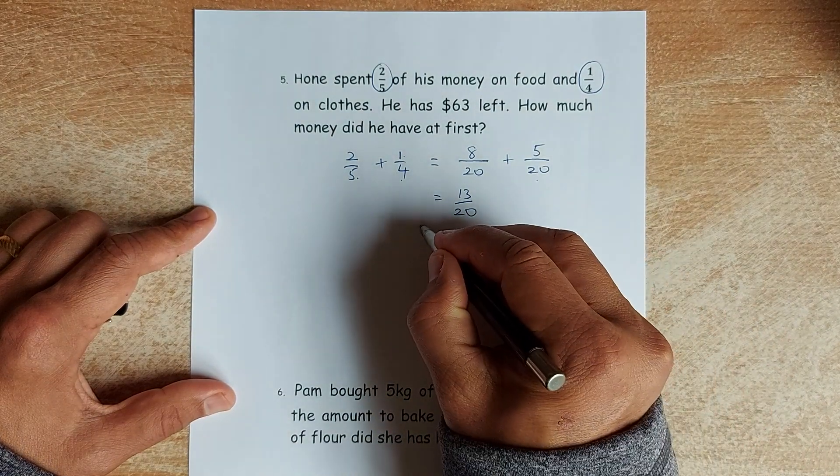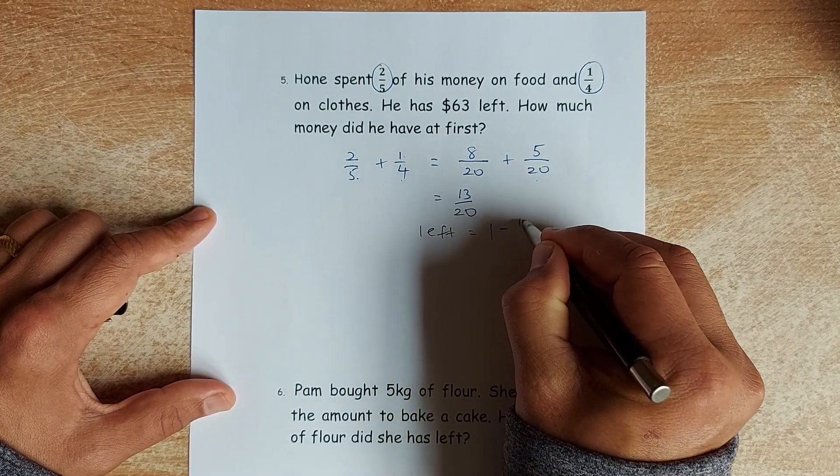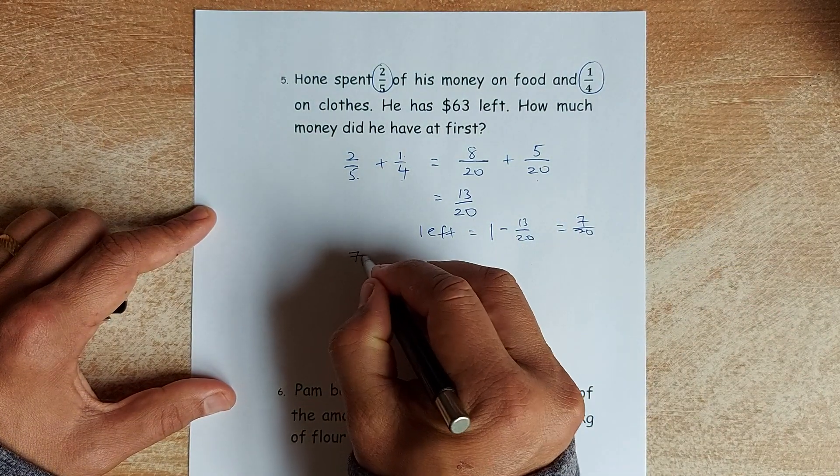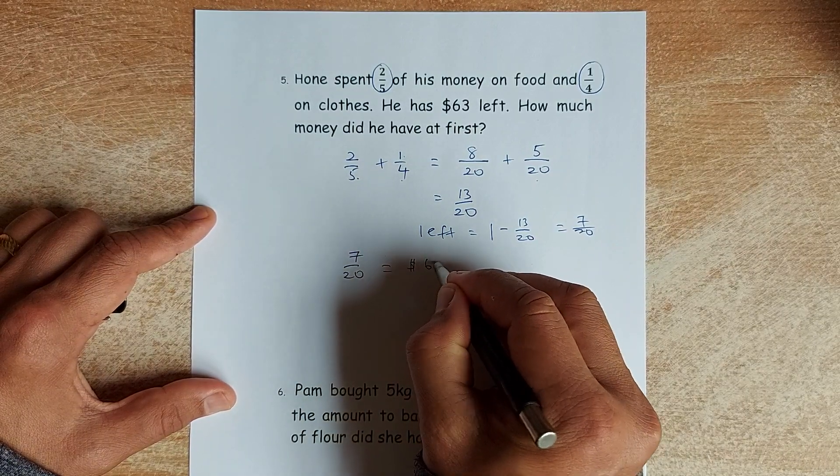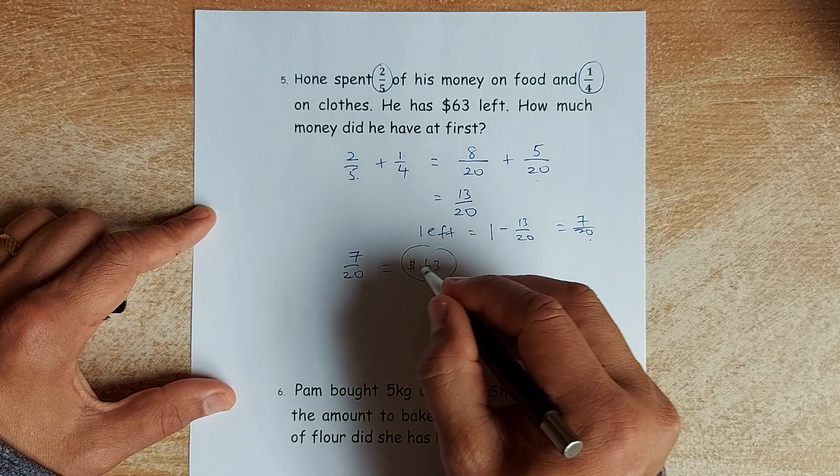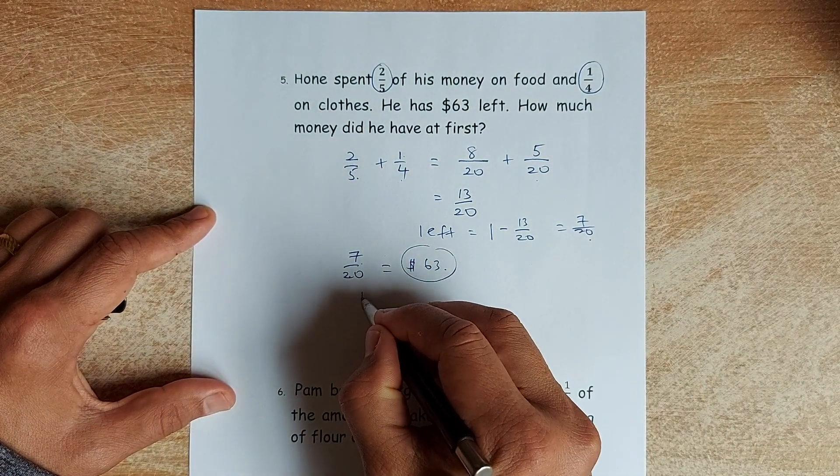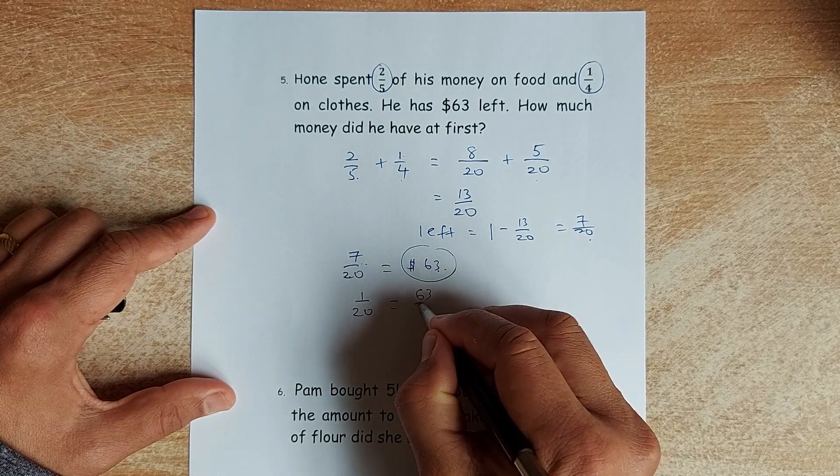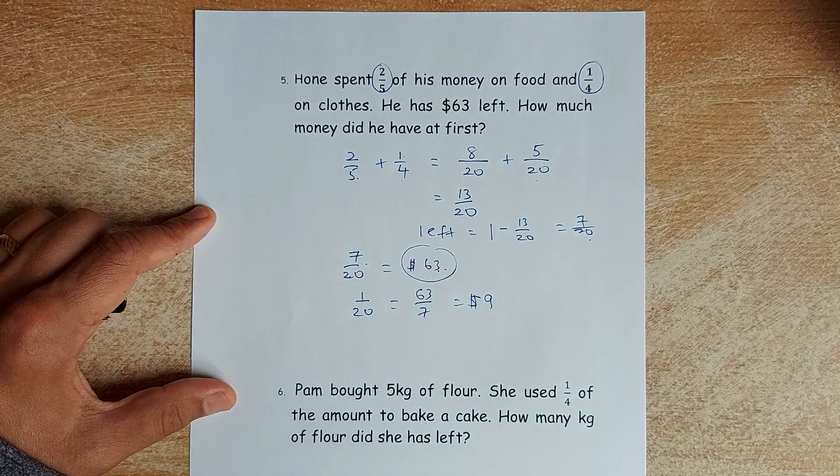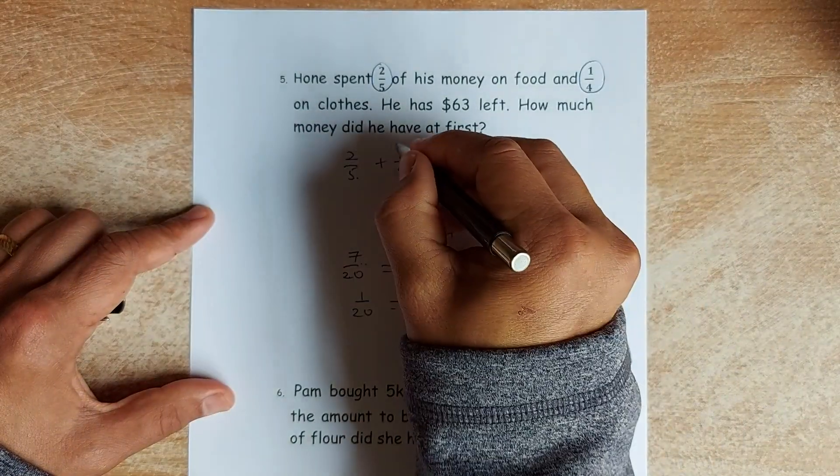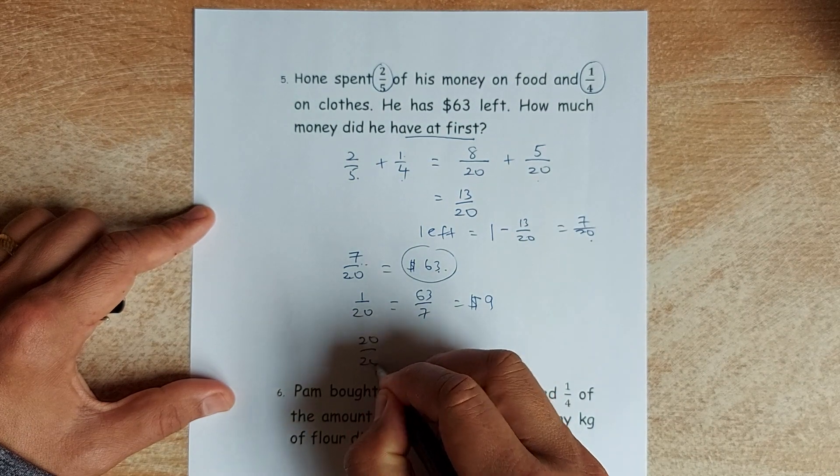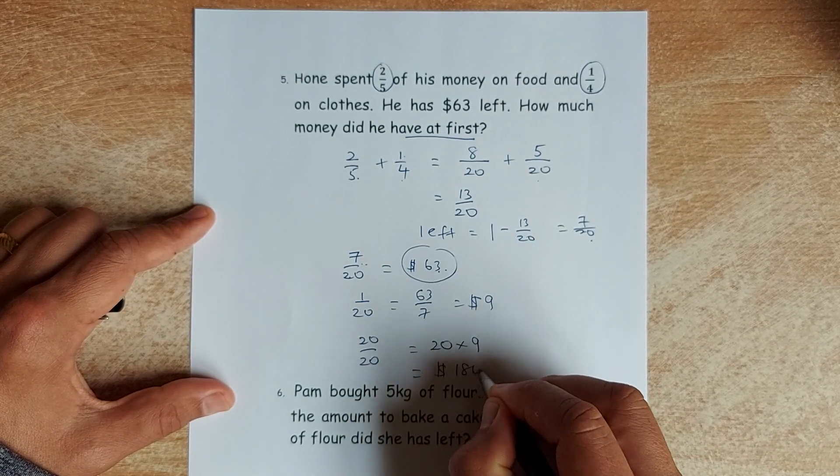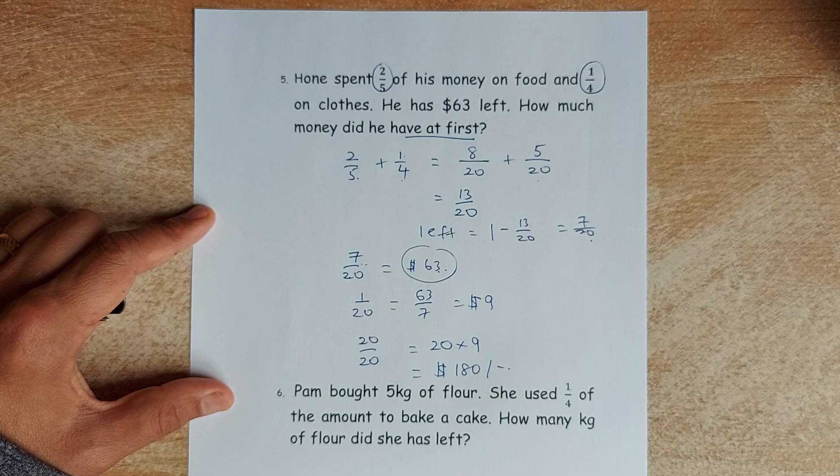His left equals to 1 minus 13 over 20. That will be left is 7 over 20. So 7 over 20 is equivalent to $63. That's what's left. 7 over 20 amount left is $63. So in other words, 1 over 20 is $63 divided by 7. That will give you $9. And the last part, of course, if you want to get the total, 20 parts times $9. And the answer is $180 is the amount he has at the start.